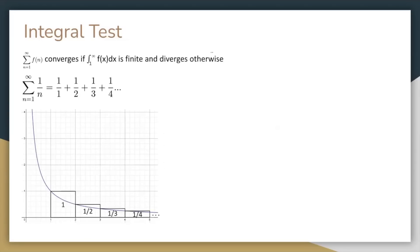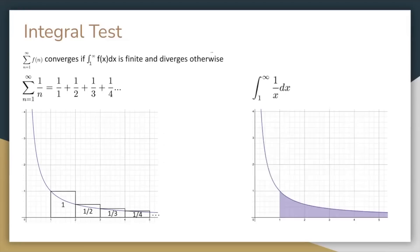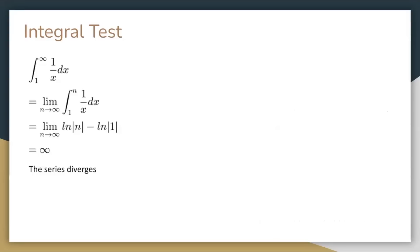The integral test. Let's consider the harmonic series 1 plus 1 half plus 1 third plus 1 fourth and so on. Notice if we graph 1 over x, then the value of this series is just the area of a left Riemann sum from 1 to infinity, and this is pretty similar to the integral from 1 to infinity of 1 over x dx. It turns out that the behavior of the integral is the same as the series. If we evaluate this improper integral by changing the upper bound to n and taking the limit as n approaches infinity, we get that the integral equals infinity, so the series diverges.